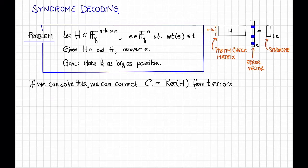More precisely, given the corrupted code word C twiddle, we can compute H times C twiddle, which is equal to H times C plus E, for some code word C and some error vector E that has weight at most T.